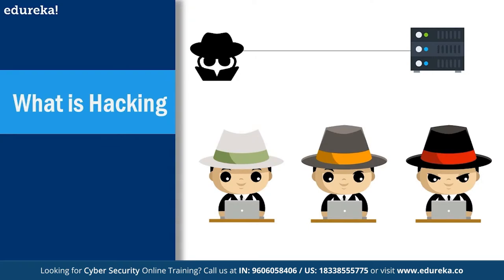Gray hat hackers stay between both extremes. They are typically people who, because of their expertise, understand systems and try to find vulnerabilities. Instead of exploiting them, they alert the authorities and software vendors. In some cases there are rewards for alerting, vendors release patches and updates, and we will come to hacking in a little more detail as we proceed.